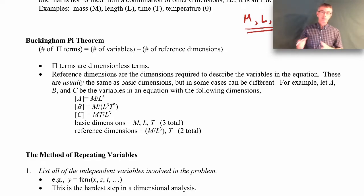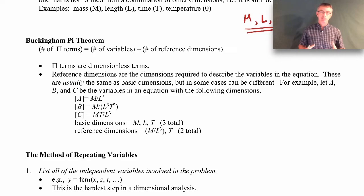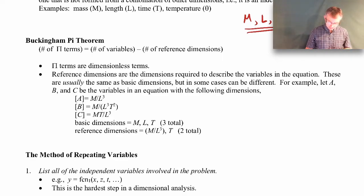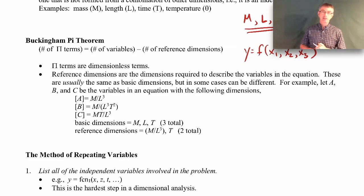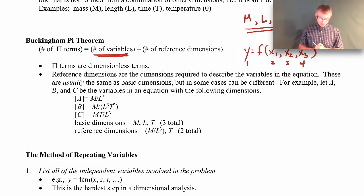We're not going to go through the theorem in detail — I'll just give you what the theorem is. The number of pi terms, or dimensionless terms, is equal to the number of variables you start with in the dimensional relationship minus the number of reference dimensions required to describe those variables. For example, if y is a function of x1, x2, and x3, the number of variables would be four: y, x1, x2, and x3.